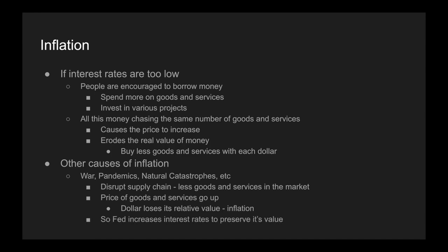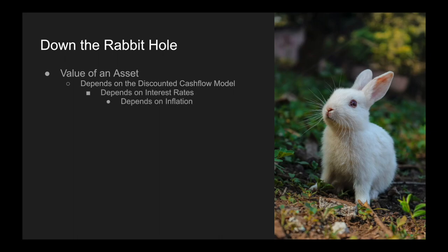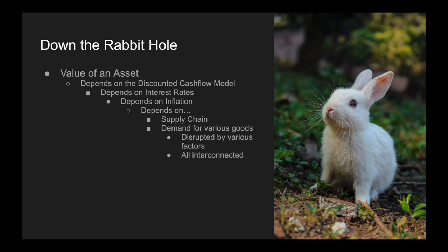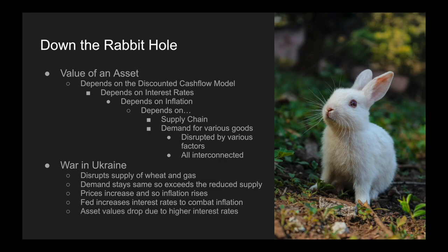Therefore, the Fed increases interest rates to try and preserve the value of the dollar. This is where fundamental analysis starts going down the rabbit hole. To determine the value of an asset, you depend on the discounted cash flow model, which depends on interest rates, which depends on inflation, which depends on supply chains, which depends on demand for various goods — and all of these things are interconnected. For example, the war in Ukraine disrupted the supply of wheat and gas — demand stayed the same, it exceeded the reduced supply, prices increased, inflation rose, therefore the Fed increased interest rates, and asset values dropped.